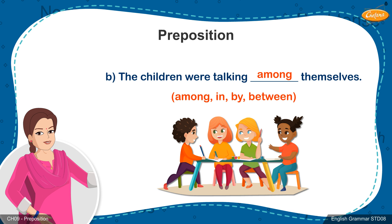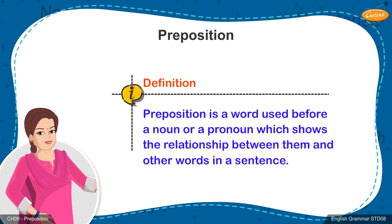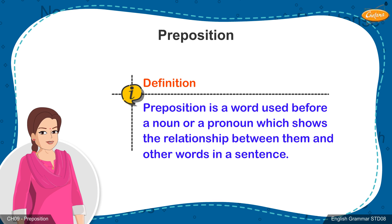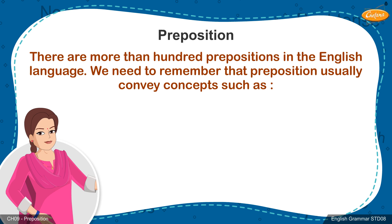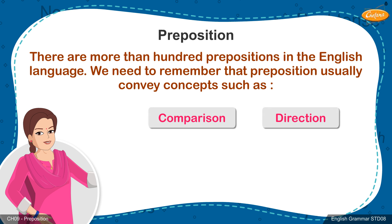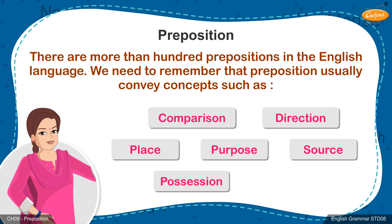I got it, teacher. Let's study the definition of prepositions first. A preposition is a word used before a noun or a pronoun and they show the relationship between them and other words in a sentence. There are more than 100 prepositions in the English language. Prepositions usually convey concepts such as comparison, direction, place, purpose, source, possession, and time.